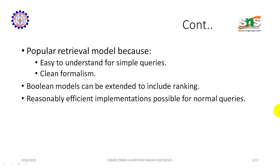The boolean model is a popular retrieval model because it is easy to understand for simple queries. It has clear formalism and can be extended to include ranking. Reasonably efficient implementation is possible for normal queries.